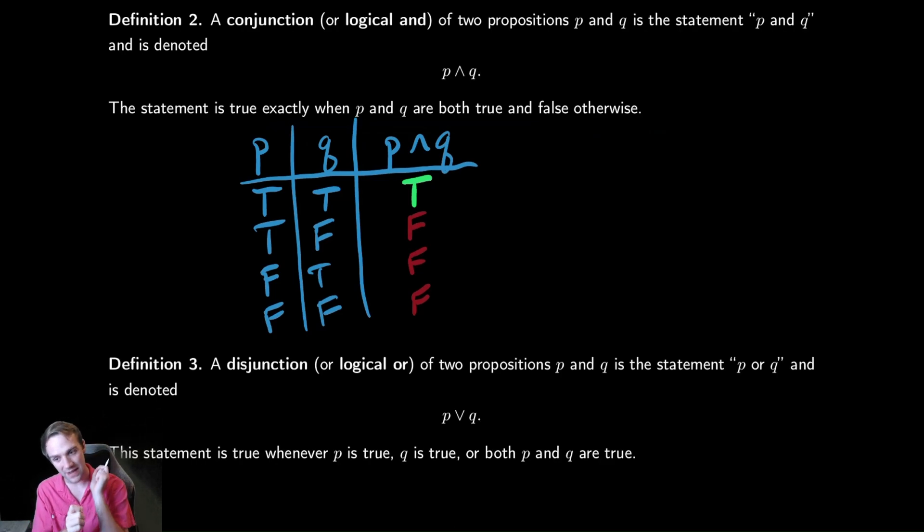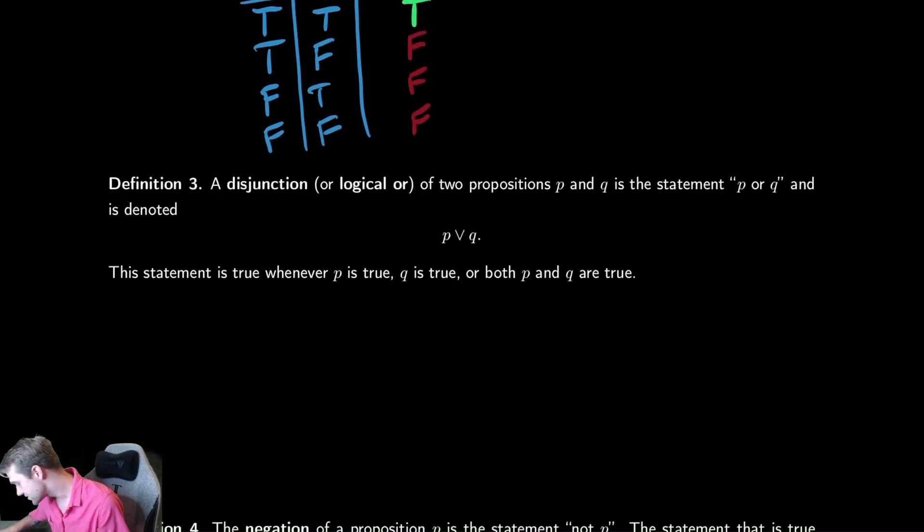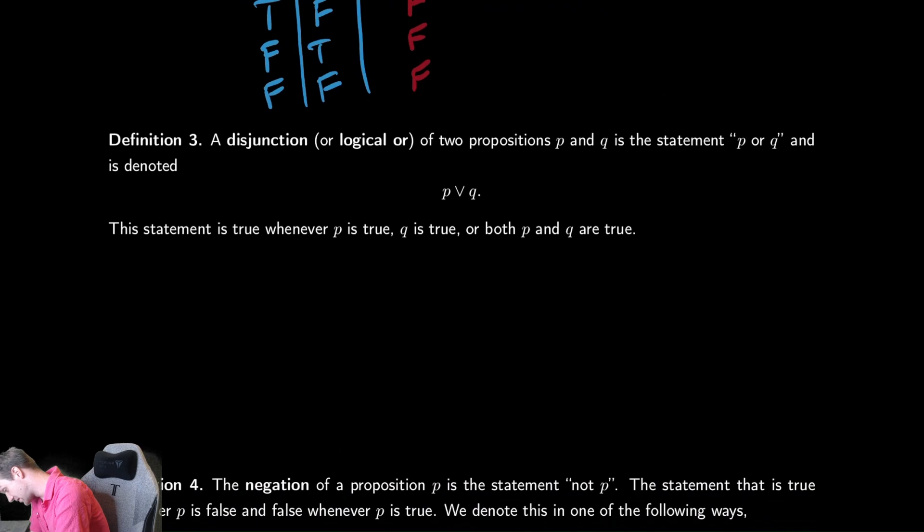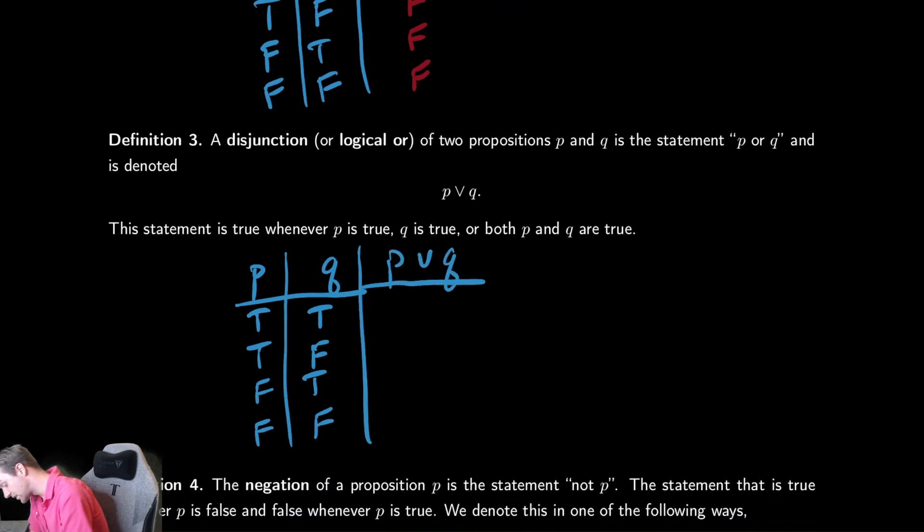So the next operation is the disjunction. Again, that's typical math fanciness. I just call it the logical OR, or OR. And again, if you're used to programming, you should be accustomed to this operation. So let's do the exact same procedure much faster this time. We create a column of P, a column for Q. We say P is true and Q is true. We say P is true and Q is false. We say P is false and Q is true. P is false and Q is false. And then we create a column for P or Q.